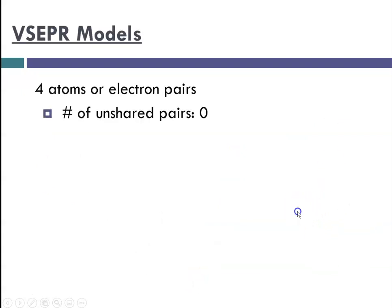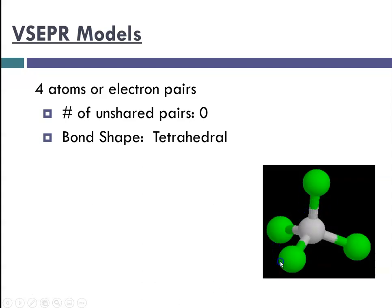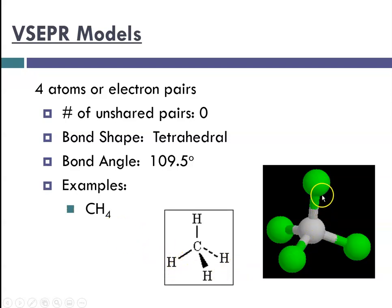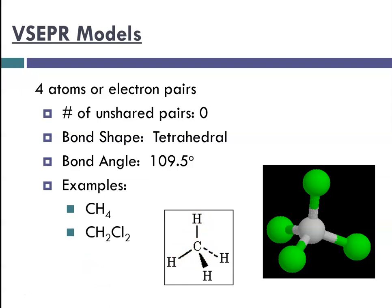If you have four atoms or electron pairs with zero unshared pairs, you get a tetrahedral shape. With four things as far apart from one another as possible bonded to a central atom, the bond angle is 109.5 degrees. An example is methane. When showing this in two dimensions on paper, we use a wedge shape for a hydrogen coming out of the plane of the paper, a dotted line for behind the plane, and a regular line for in the plane. Other examples include dichloromethane and silicon tetrachloride.